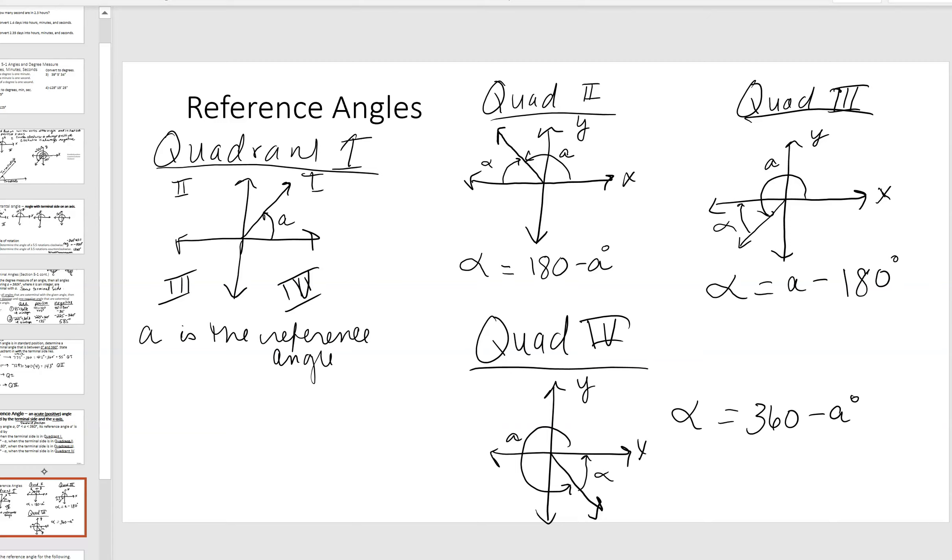Now, in quadrants two and three, I always say, in quadrants two and three, what takes it to 180? So, you'll hear me say this sometimes. I'll ask that. For quadrants two and three, what takes it to 180? For quadrant four, I ask, what takes it to 360? Those are kind of things to think about. In quadrant one, it is its own reference angle, period.